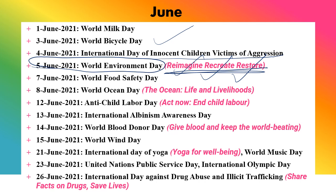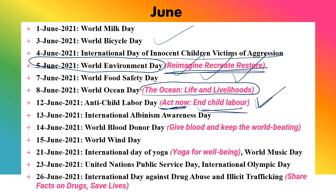8th June is World Ocean Day, with theme 'The Ocean: Life and Livelihoods.' 12th June is World Anti-Child Labour Day — its theme is very important and frequently asked: 'Act Now, End Child Labor.' Students should take action and help end child labor.